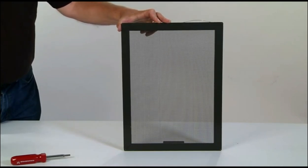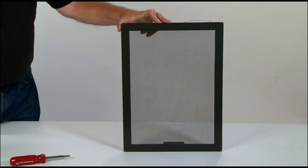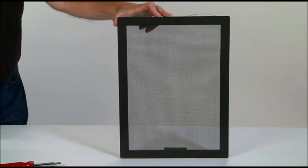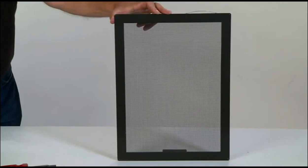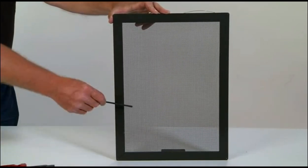The Permascreen window screens are 18, 23, or 28,000ths of an inch 304 stainless steel, providing a far more durable and long-lasting window screen.